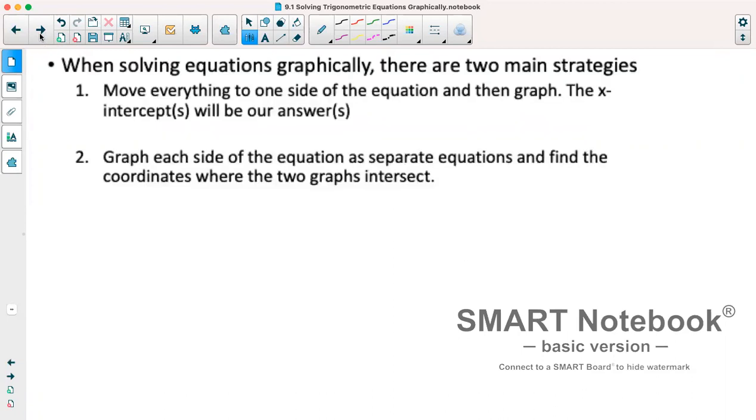When solving graphically, there are two main strategies. One strategy is to move everything to one side of the equation. What this does is make the other side equal to zero, so when we graph we're solving for x-intercepts because they are where y equals zero. The other strategy is to graph each side of the equation as separate equations and find the coordinates where the two graphs intersect each other.